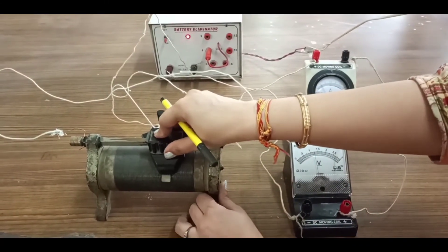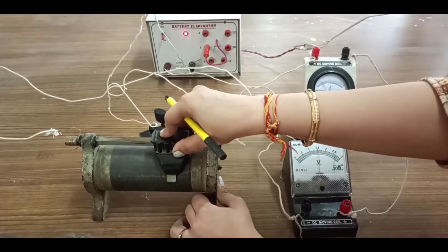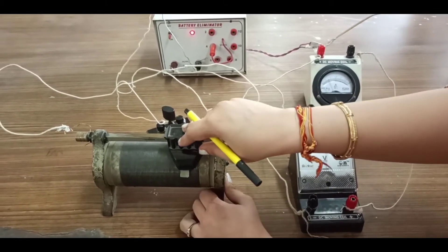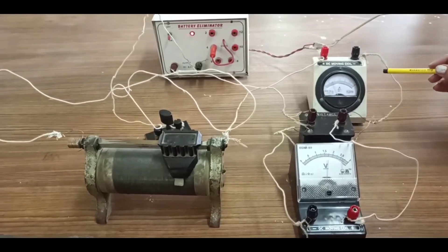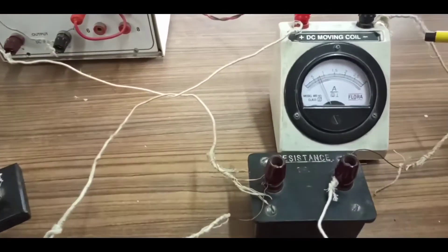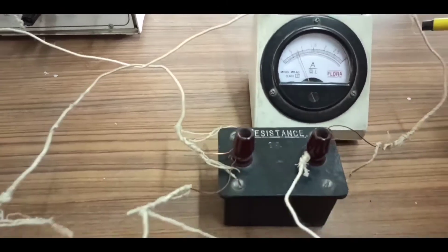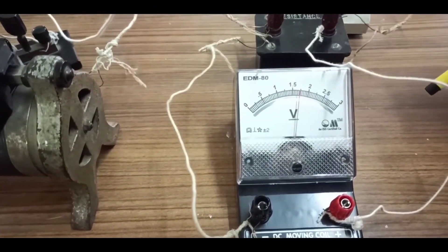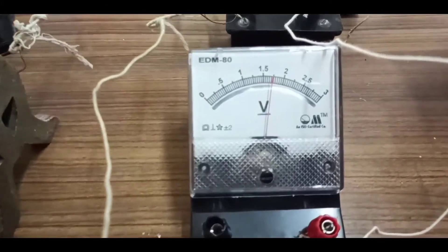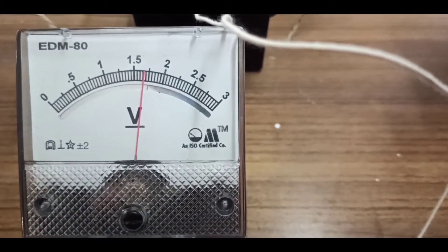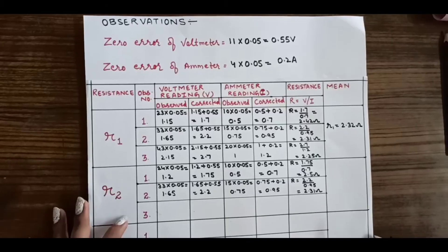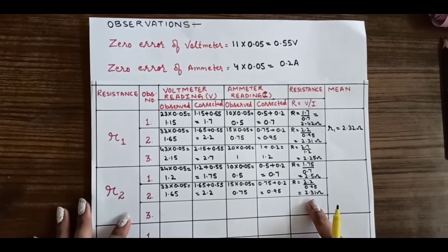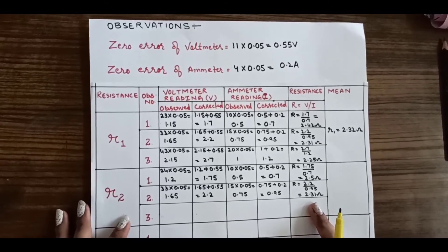Let's take the second reading by adjusting the position of the rheostat. I have adjusted the rheostat so that the number of divisions in the ammeter is 15 divisions and the corresponding reading in the voltmeter is 33 divisions. The calculation for the second observation gives a resistance of 2.31 ohms.